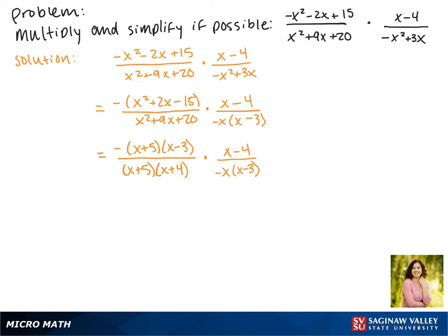So now we'll be looking for factors that cancel. We have an x plus 5 and an x plus 5, those will cancel. On the top, the x minus 3 and the bottom x minus 3 will cancel. And then we have these two negatives top and bottom, those will cancel out.